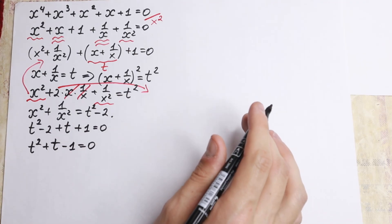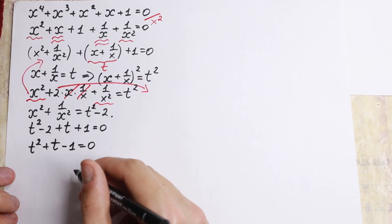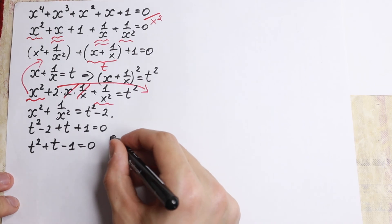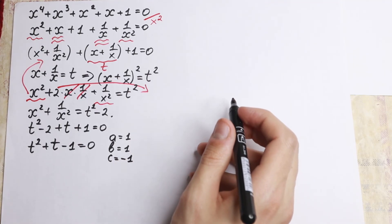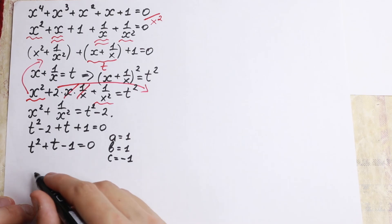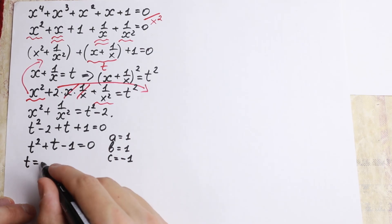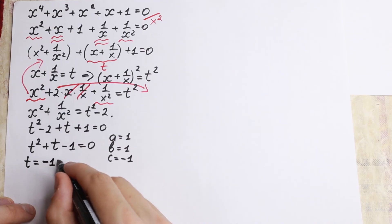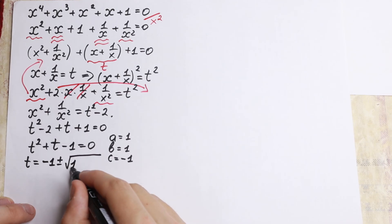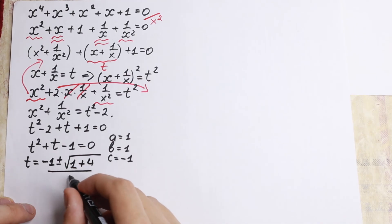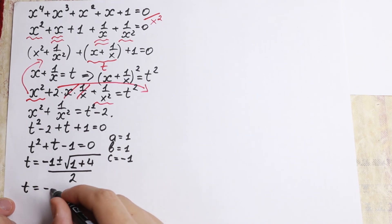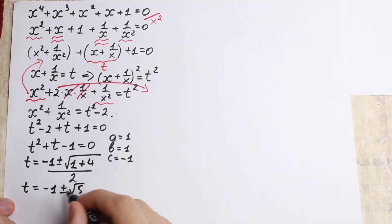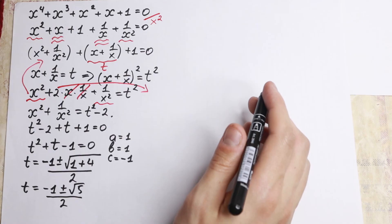So now we have the quadratic equation t squared plus t minus 1 equals zero. We can easily solve it: a equals 1, b equals 1, c equals minus 1. Using the quadratic formula, t equals (minus 1 plus or minus the square root of 1 plus 4) over 2, giving t₁ and t₂ equal to (minus 1 plus or minus the square root of 5) divided by 2.